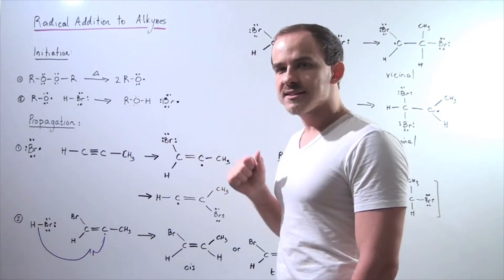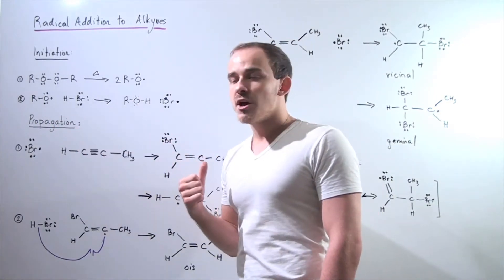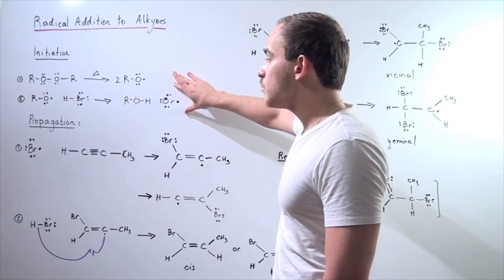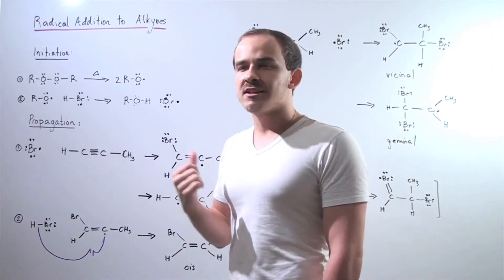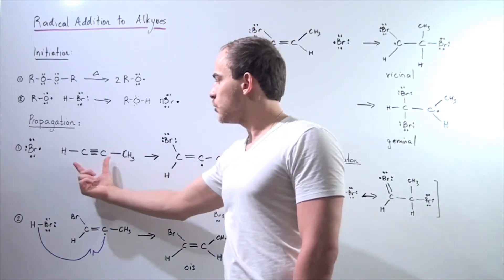Now in the second step, in the propagation step, we take this chain-carrying radical and react it with our alkyne molecule shown here.